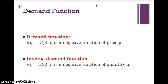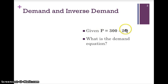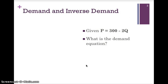Suppose we are given that price is equal to 300 minus 2Q. Here we're seeing that price is the subject of the formula. The equation shows a negative relationship between price and quantity — when quantity goes up, price will fall. This represents an inverse demand function. If you're given an inverse demand function, you can come up with the demand function by rewriting the equation to make quantity the subject.